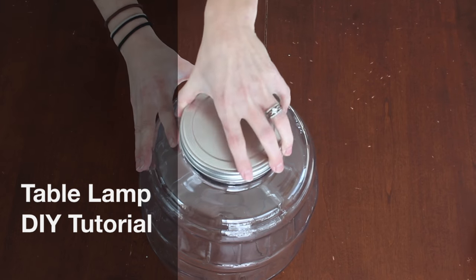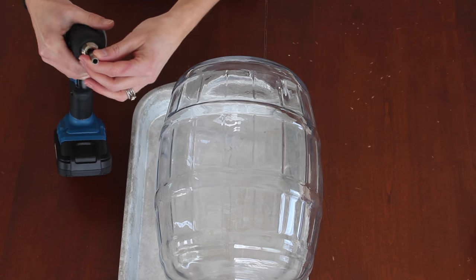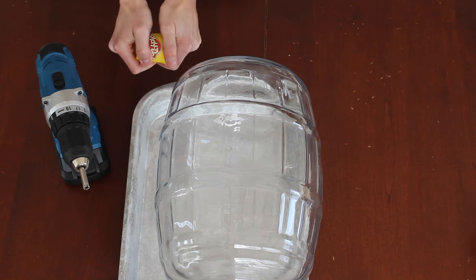I'm going to be drilling into these large glass jars from Anchor Hawking using a diamond-crusted drill bit to make my own lamps.